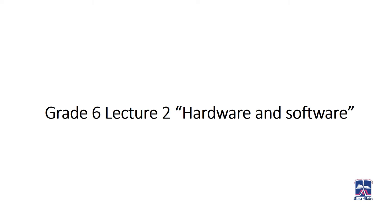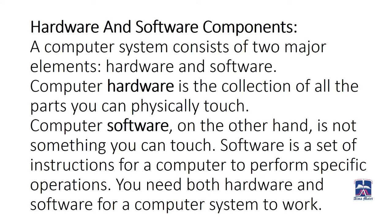Assalamualaikum grade 6. Today is our second lecture and it's about hardware and software. A computer system consists of two major elements: hardware and software. Computer hardware is the collection of all the parts you can physically touch. Computer software, on the other hand, is not something you can touch — it is a set of instructions for a computer to perform specific operations. You need both hardware and software for a computer system to work.